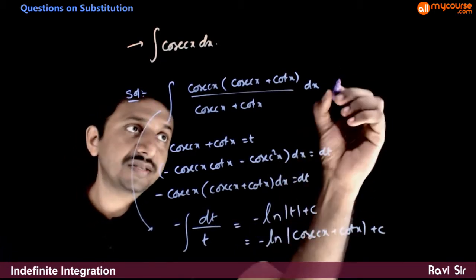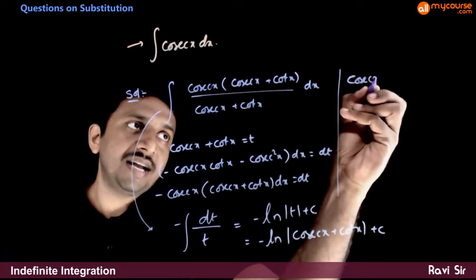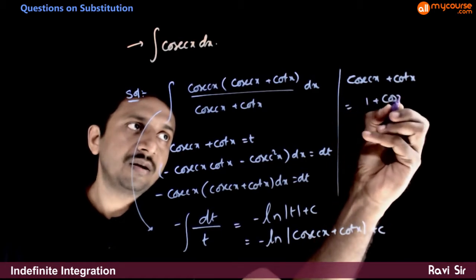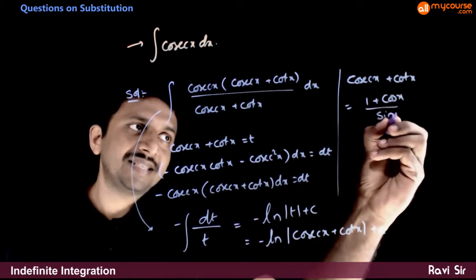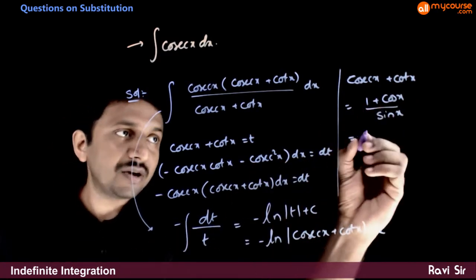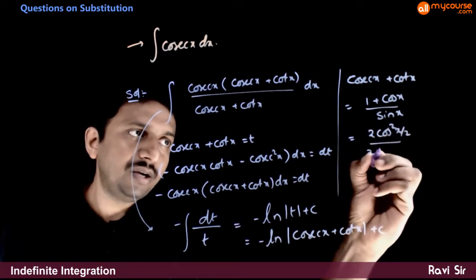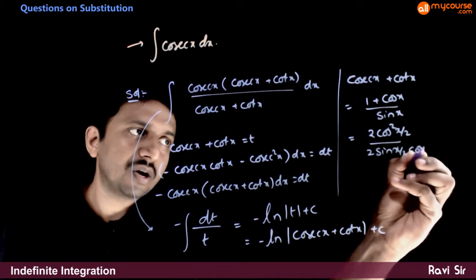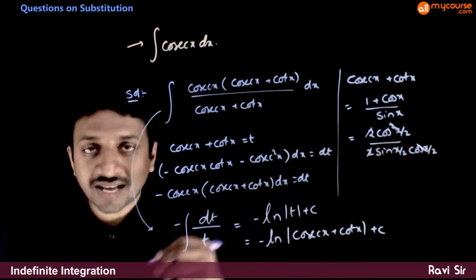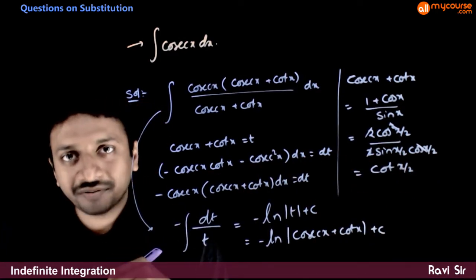Cosecant x plus cot x can be written as (1 plus cos x) over sin x. Now 1 plus cos x can be written as 2 cos squared(x/2), and sin x as 2 sin(x/2) cos(x/2). The 2's cancel and cos(x/2) cancels, giving cot(x/2).